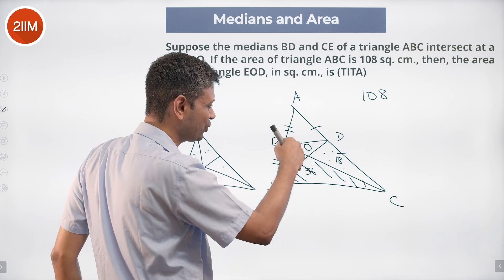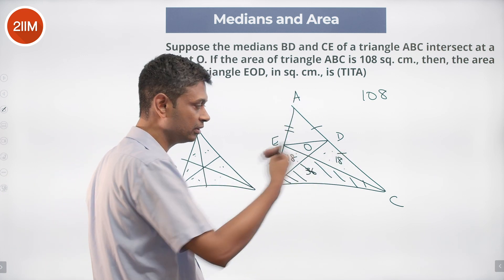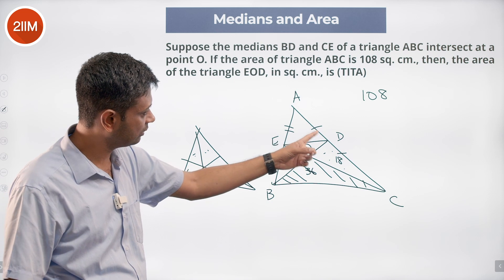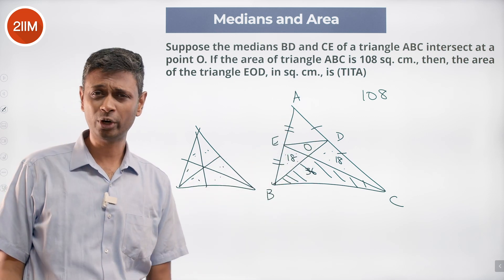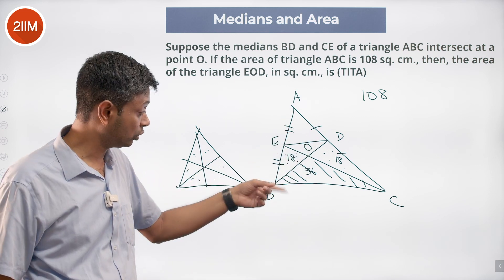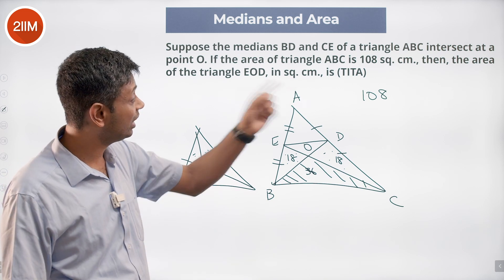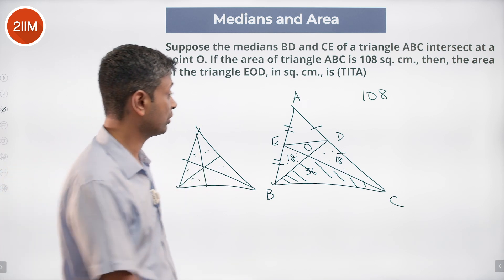AED is just half of ABC—this is half, this is half, this will also be half by midpoint theorem. But the area is one fourth of the area of triangle ABC. ABC area is 108, so 108 by 4, this is 27.